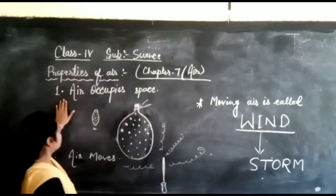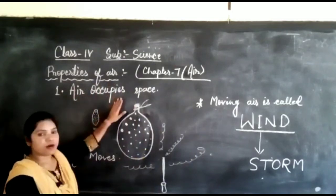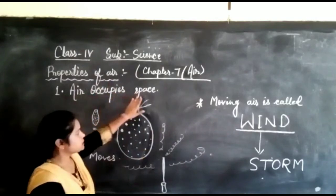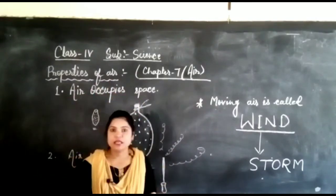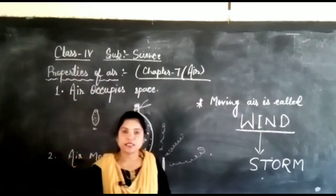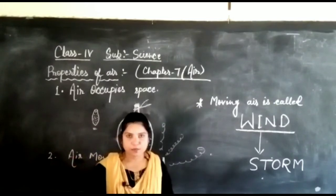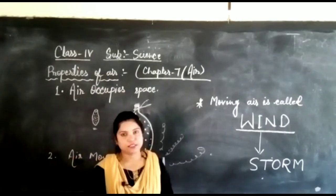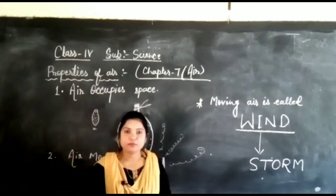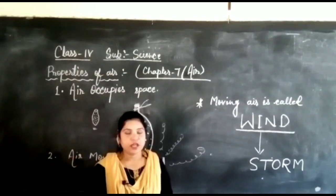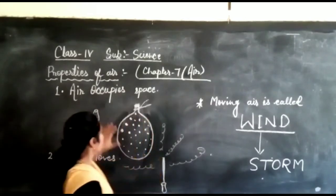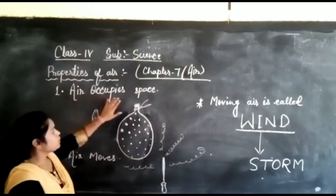The first property is air occupies space. What does it mean? Like other things that occupy space, similarly air also occupies space. We can prove it very easily in everyday life. So the first one is air occupies space.